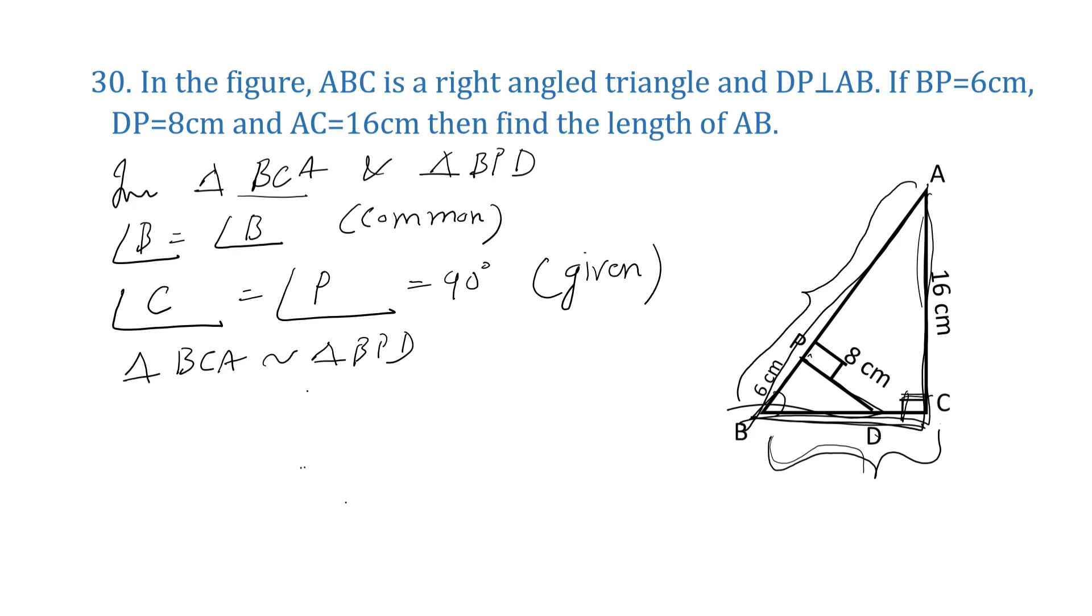Now, BC we want to find. BC by BP. For BC, corresponding side is BP. We know BP, we can substitute the value. Then PD and AC. CA by PD. Corresponding sides, we have to find out. Corresponding sides of similar triangles are in proportion.